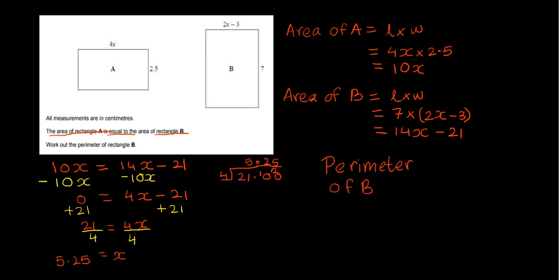So we found the value of x. Now the question says work out the perimeter of rectangle B. So now the last bit is the perimeter of B. To find the perimeter I need to add up all the sides. This one here is 2x minus 3 and that's 7, so I'm going to add all four sides up: 7 plus 7 plus 2x minus 3 plus another 2x minus 3.